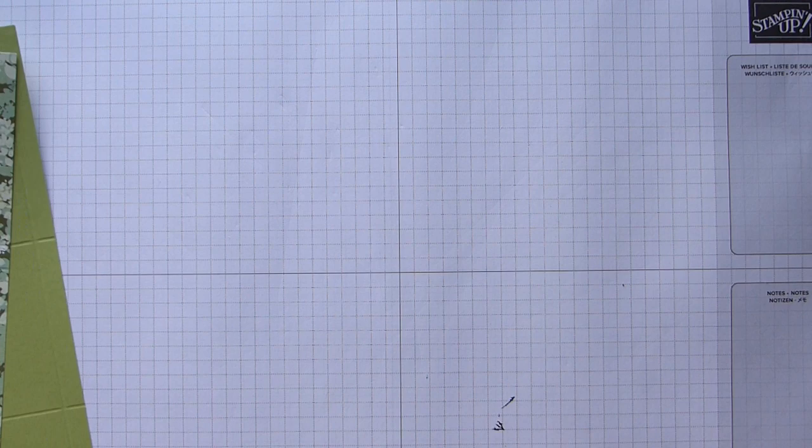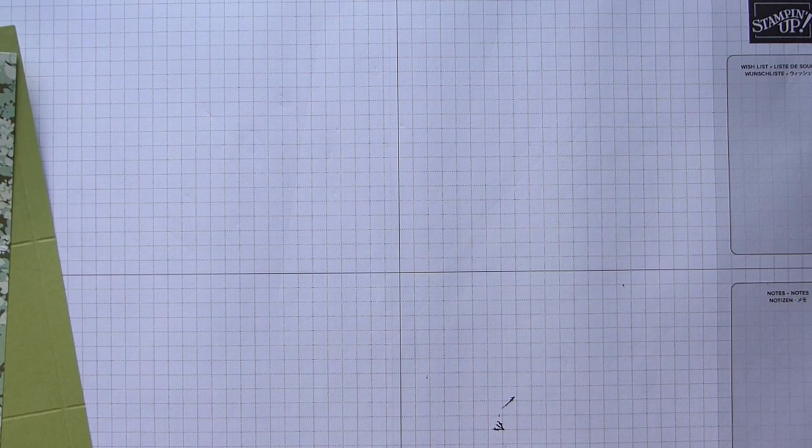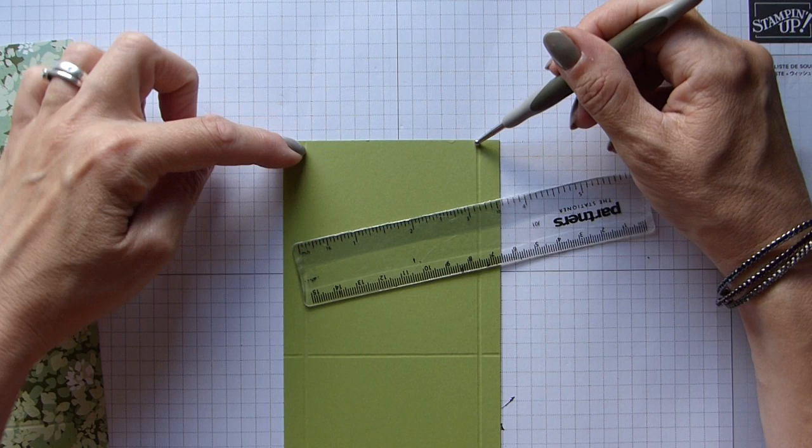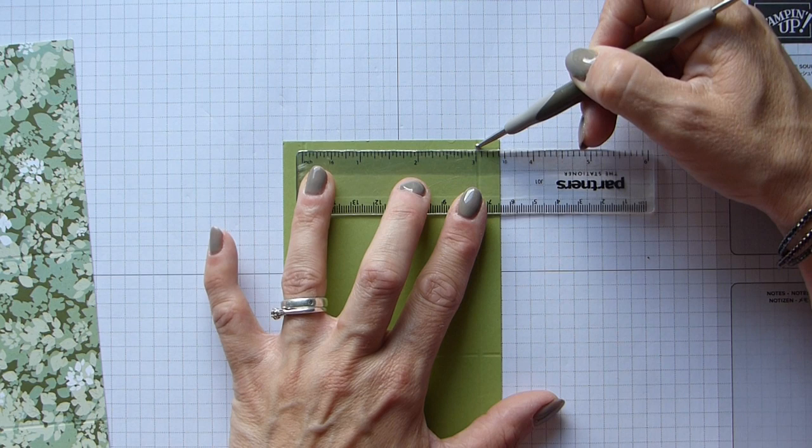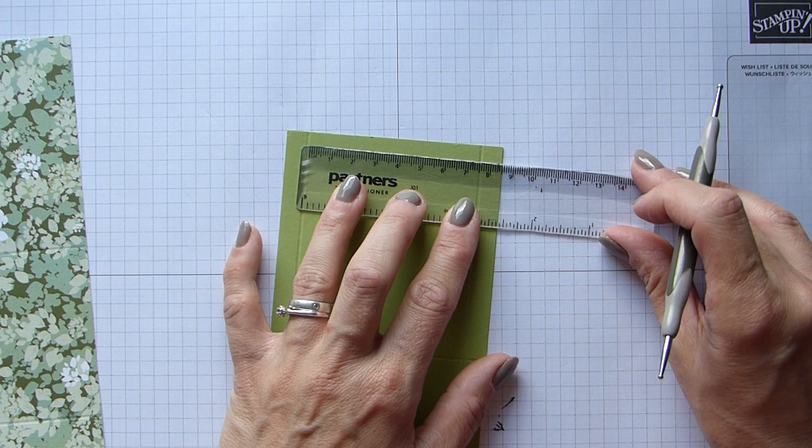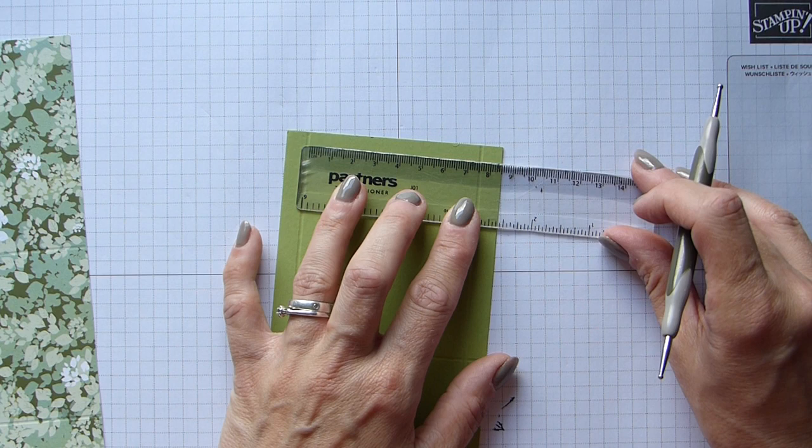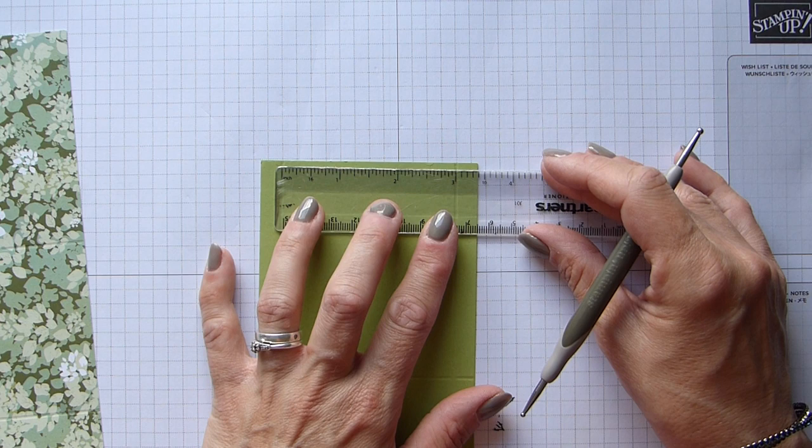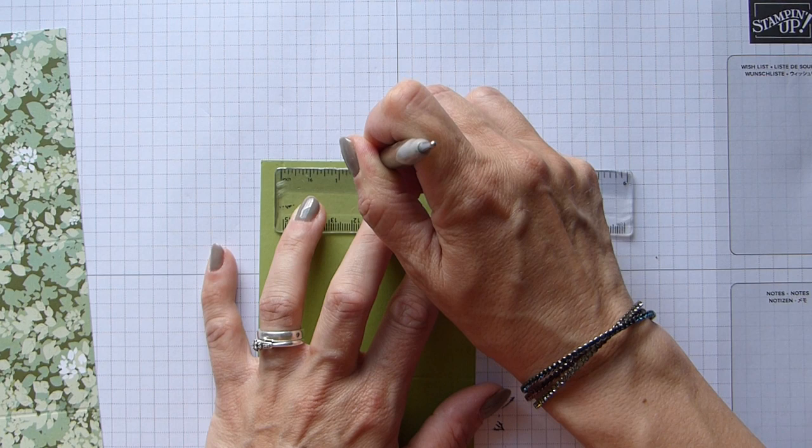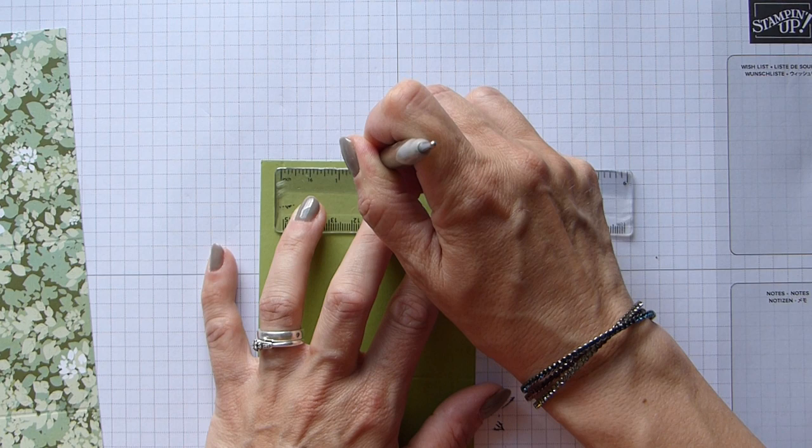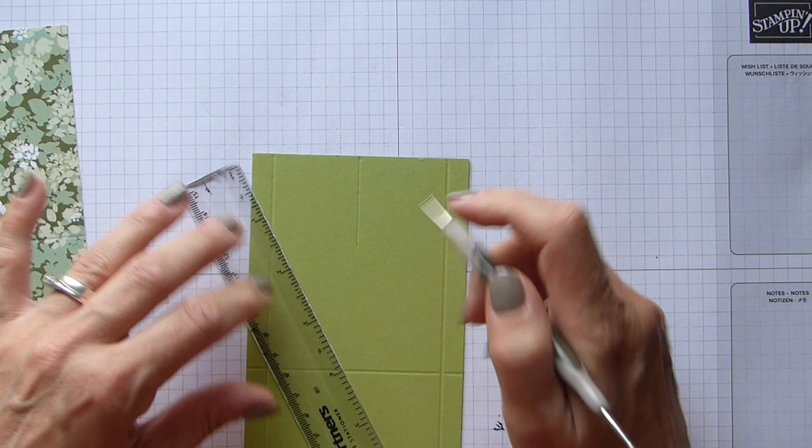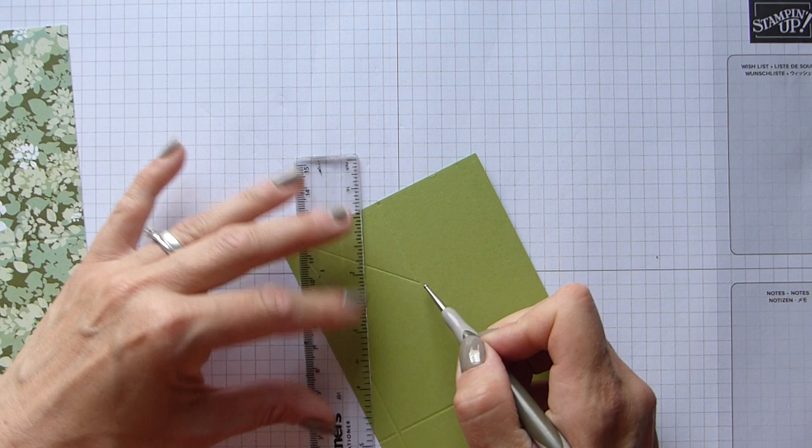Now get your ruler again. We're going to mark the center on either side of the score line. I'm putting my ruler to this score line and measuring to that one, which is 3 inches or 8 centimeters. Mark the center of the top at 1 and a half inches, which is 4 centimeters. Then mark 1 and a half centimeters down, score 1 and a half centimeters down, and then score from that corner up to that top score line. Same on this side.